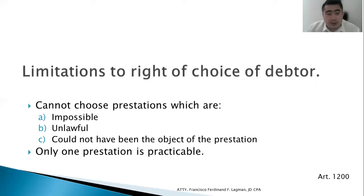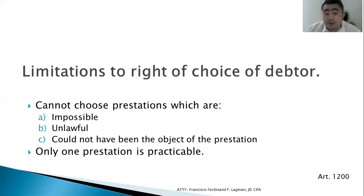Limitations to the right of choice of the debtor: the debtor cannot choose prestations which are impossible, unlawful, or could not have been the object of the prestation. If there is only one prestation which is practicable, it is no longer an alternative obligation — it becomes a simple obligation.